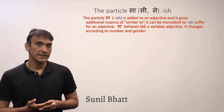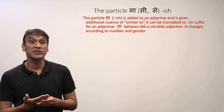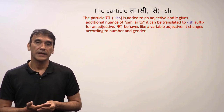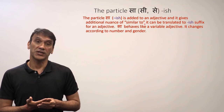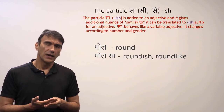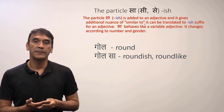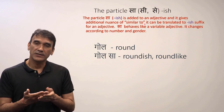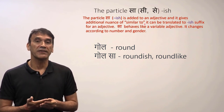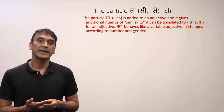The next grammar point is the particle 'sa'. The particle 'sa' is added to an adjective and gives an additional nuance of meaning, similar to adding the suffix '-ish' to an adjective in English. For example, 'gol' means round, but when you add 'sa' to 'gol' — 'gol sa' — it becomes 'roundish', similar to round, not exactly round but a round-like or roundish shape.